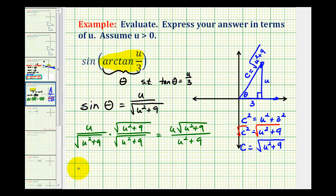So again we could leave our answer with the square root in the denominator, or we could rationalize it, and it would be u times the square root of u squared plus nine, all over u squared plus nine.